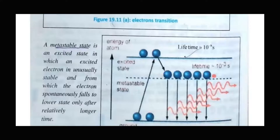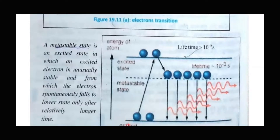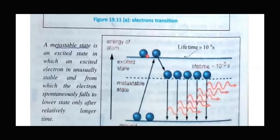Once population inversion is achieved, we are ready to produce laser and start laser action. The material used to excite the atoms or electrons to the third energy level is known as the pumping material. It can be optical pumping or electrical pumping. With pumping, electrons are excited and then fall to the metastable state, where the population becomes inverted.